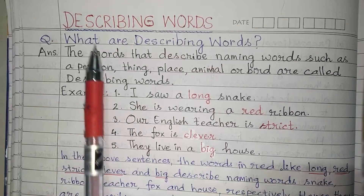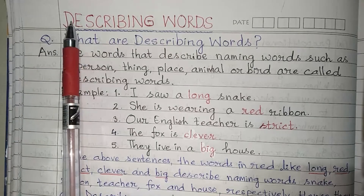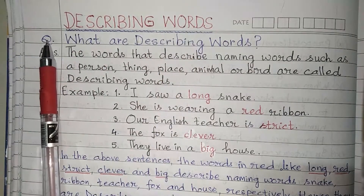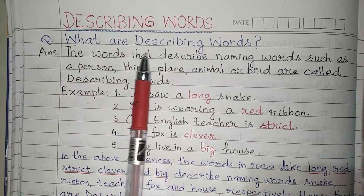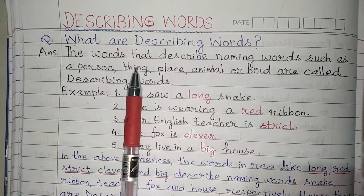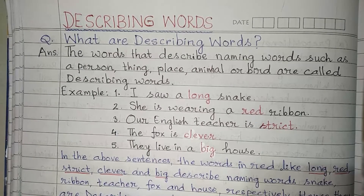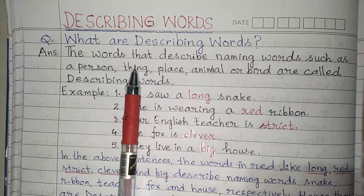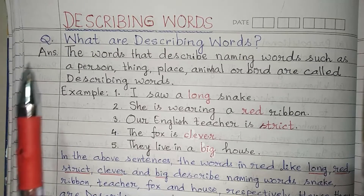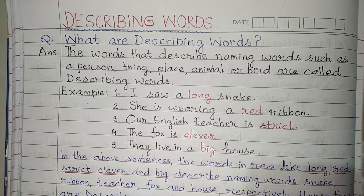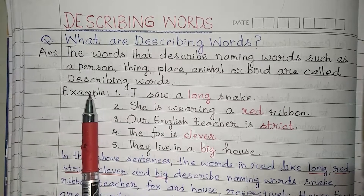Today our topic of discussion is describing words. What are describing words? The words that describe naming words such as a person, thing, place, animal, or bird are called describing words. Any word that describes a naming word and gives information about it — those words are called describing words.